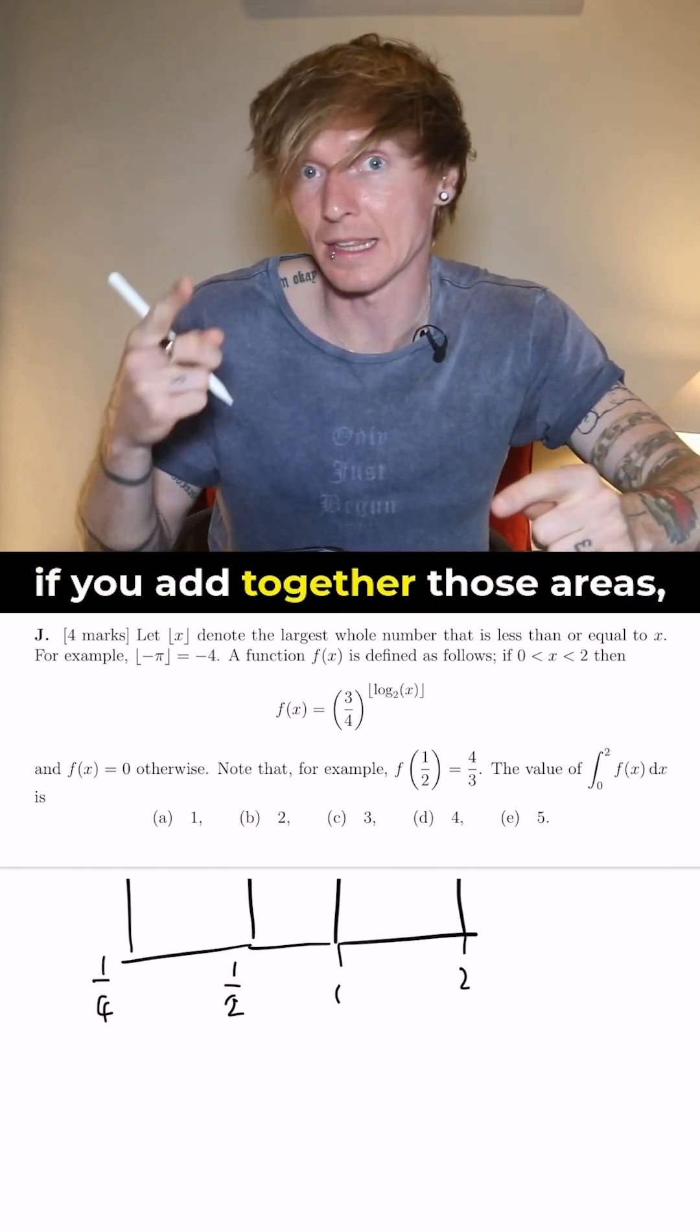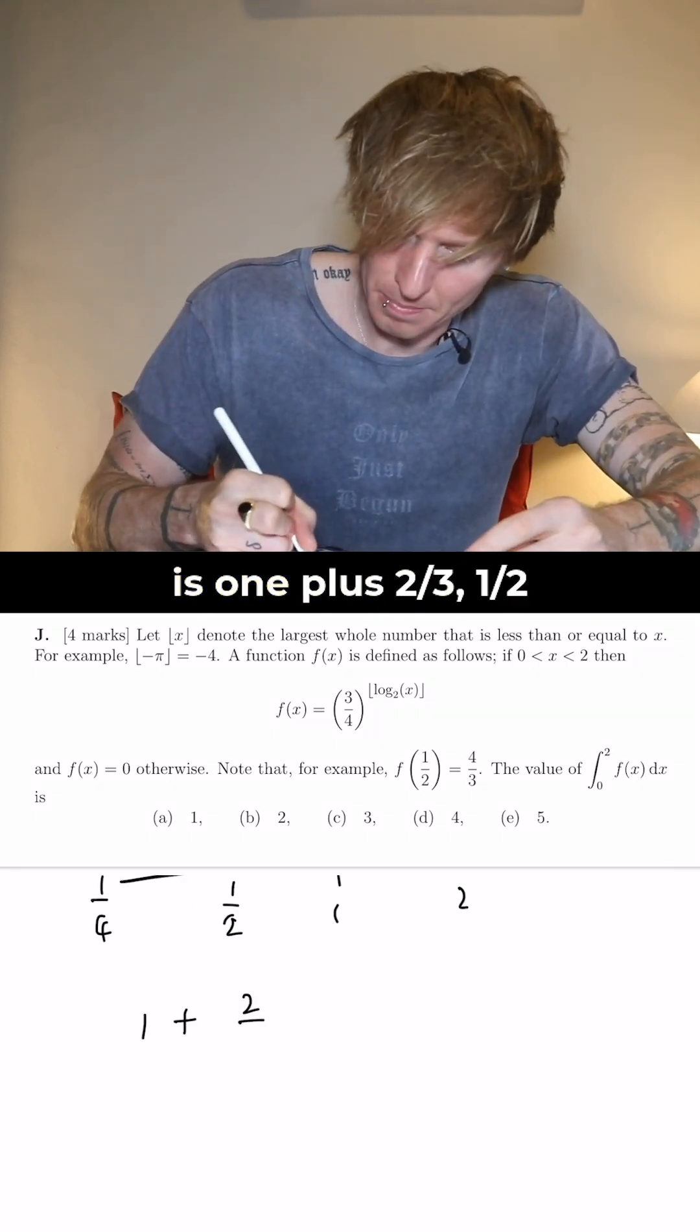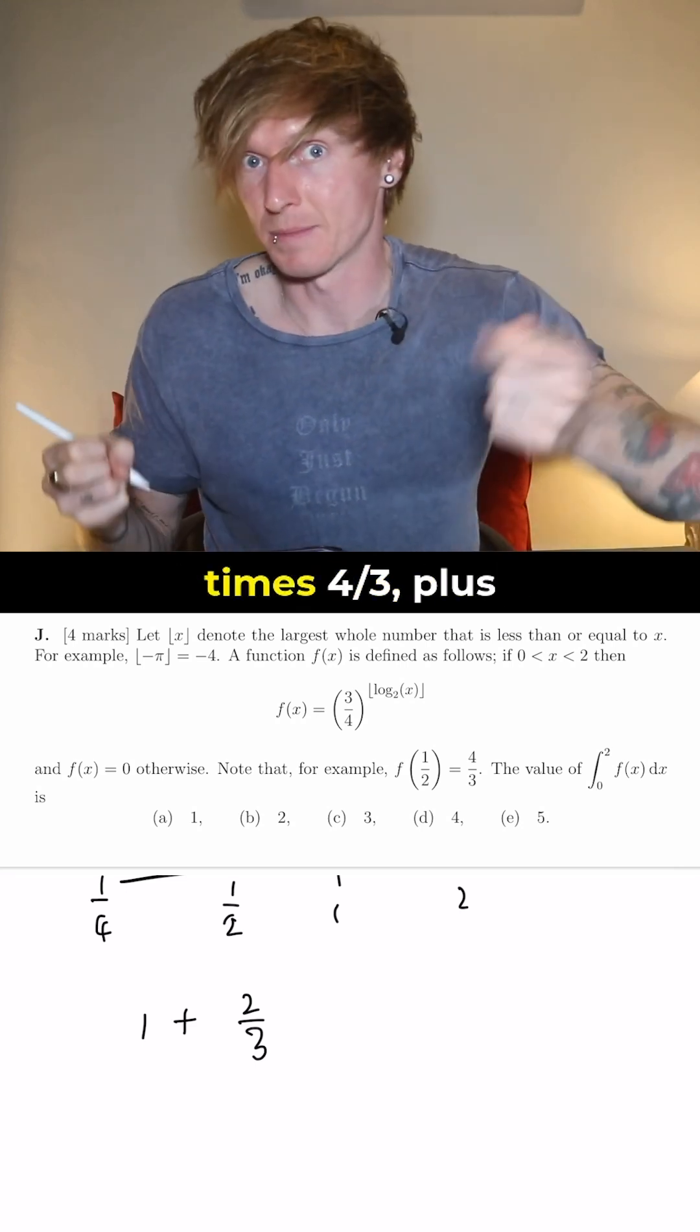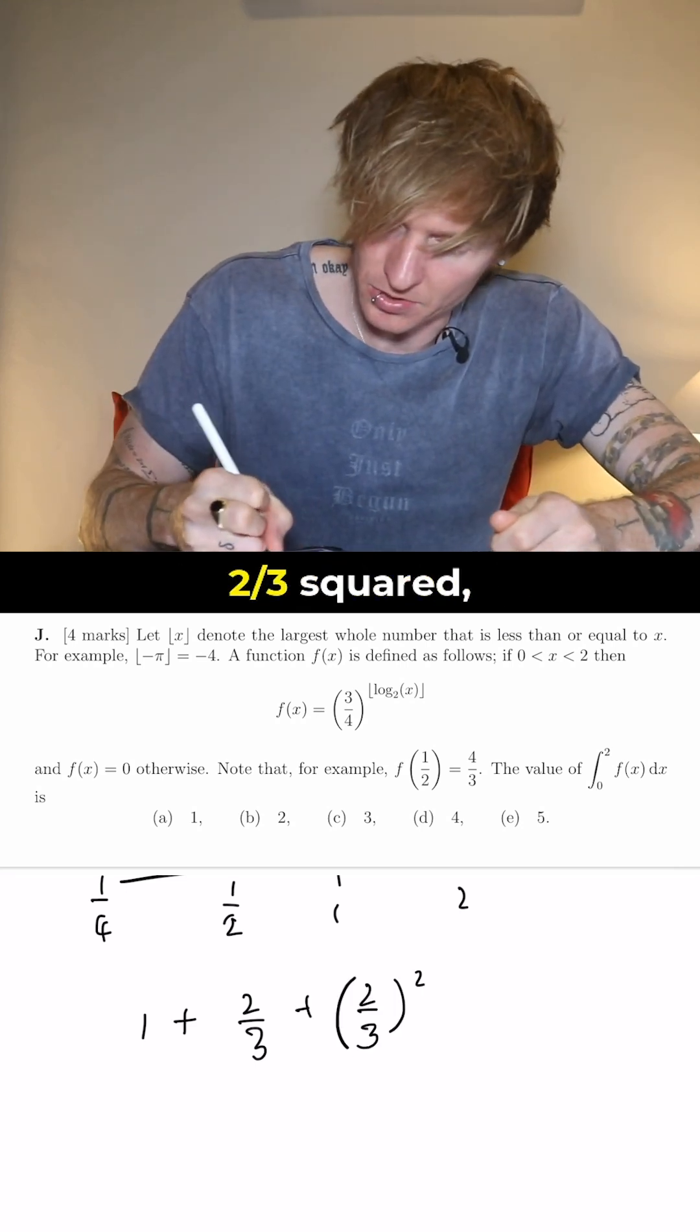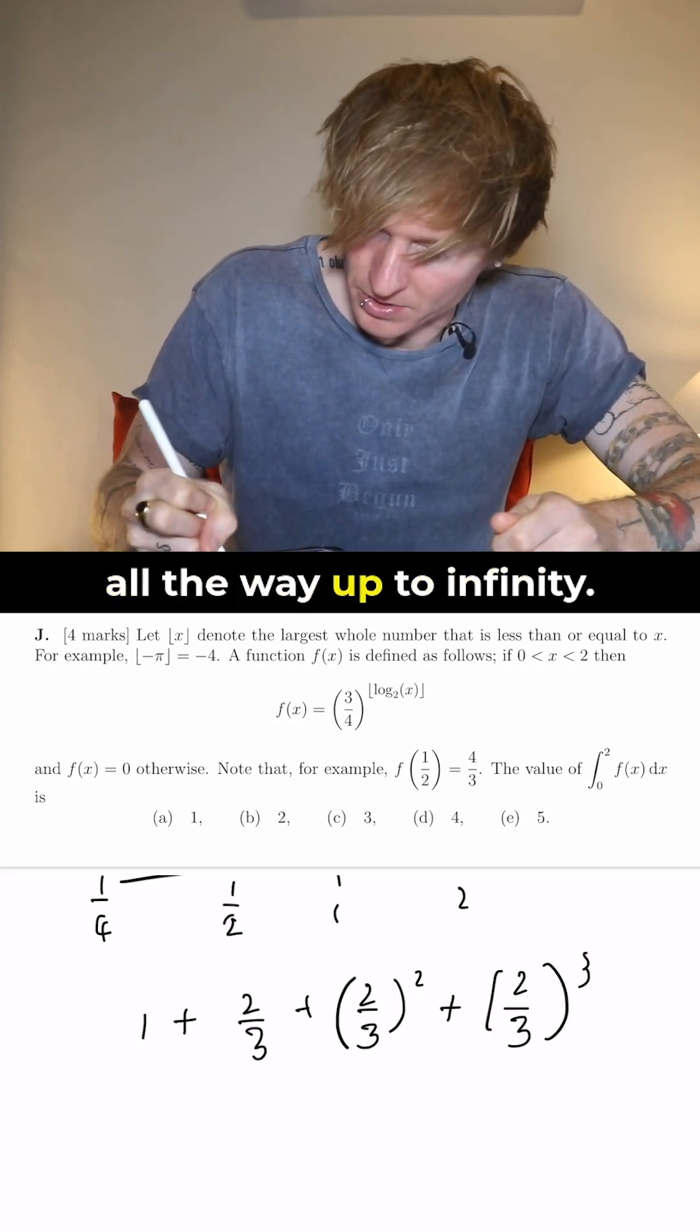So what we've actually got if you add together those areas is 1 plus 2/3 times a half times 4/3 plus 2/3 squared all the way up to infinity.